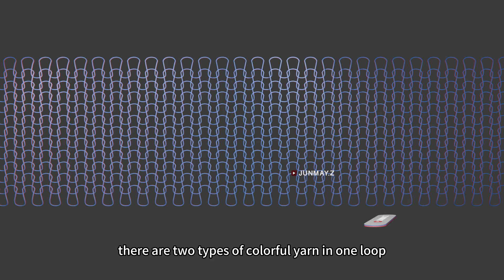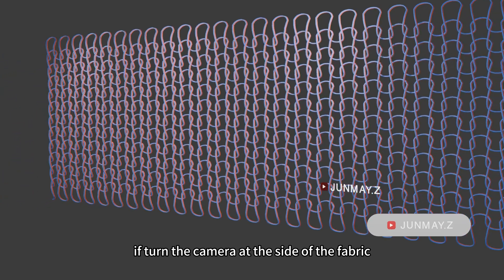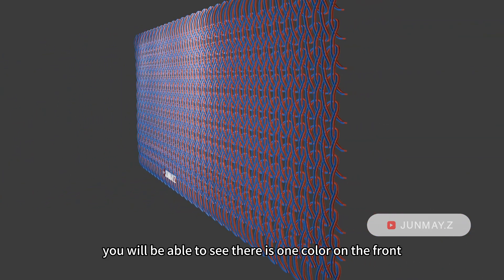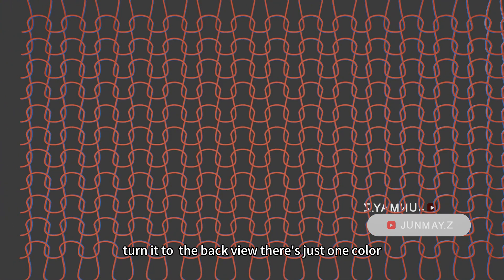There are two types of colorful yarn in one loop, but on the front view, there is just one color that you can see. If you turn the camera at the side of the fabric, you will be able to see there is one color on the front and another on the back side. Turning to the back view, there is just one color.